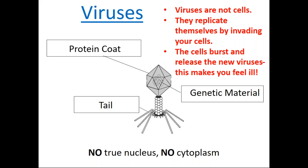Viruses cause diseases such as polio and chickenpox in humans, but viruses can infect all kinds of organisms — including bacteria. Viruses have a simple structure: a protein coat that protects the genetic material inside. They contain none of the other structures found in living cells and cannot carry out life processes on their own. That's why they are classified as non-living organisms. Many scientists argue that viruses are not true organisms at all.